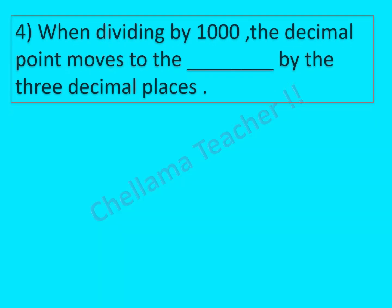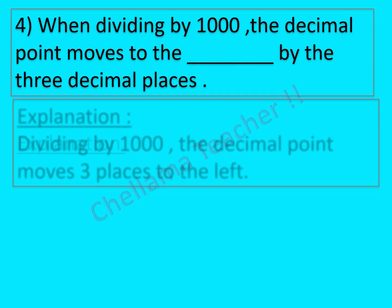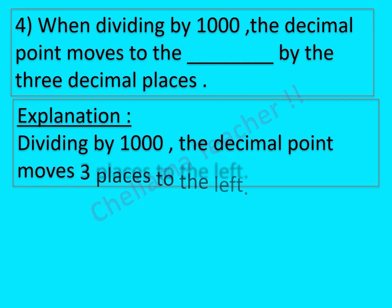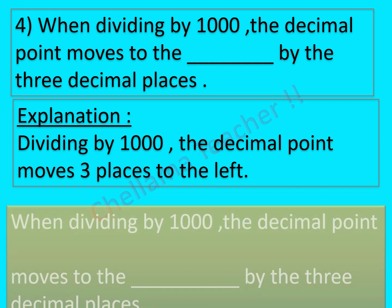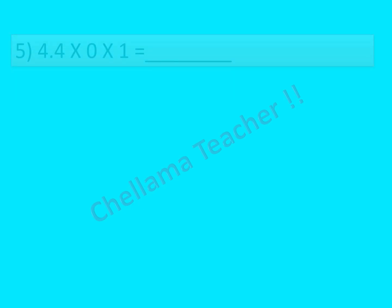Question No. 4: When dividing by 1000, the decimal point moves to the dash by 3 decimal places. Dividing by 1000, the decimal point moves 3 places to the left. So the final answer is: when dividing by 1000, the decimal point moves to the left by 3 decimal places.